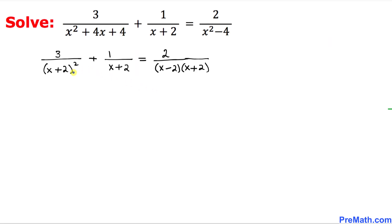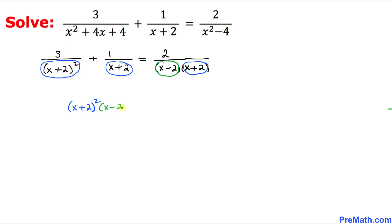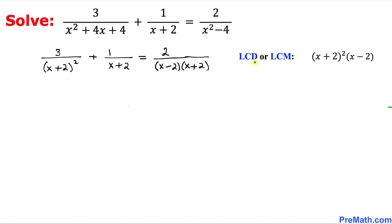Our next task is to remove these fractions. Focusing on the denominators: the first fraction has (x + 2)², the second has (x + 2), and the right hand side has (x + 2). Among these, the highest power is (x + 2)². We also have the factor (x − 2). So our least common denominator, or least common multiple, turns out to be (x + 2)² times (x − 2).